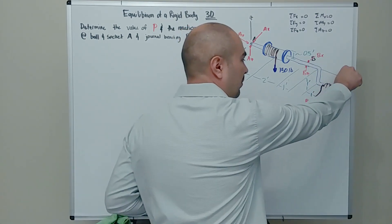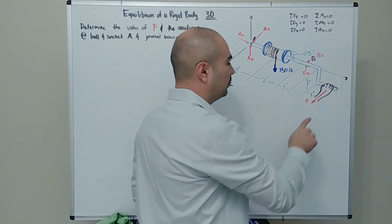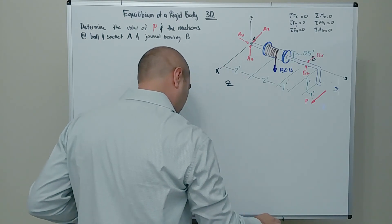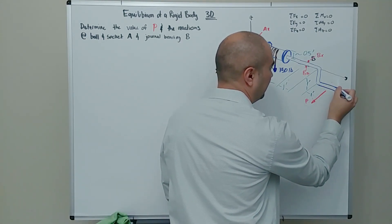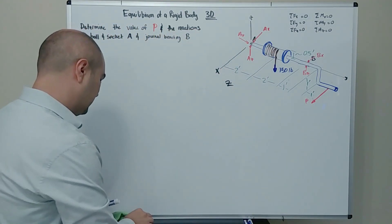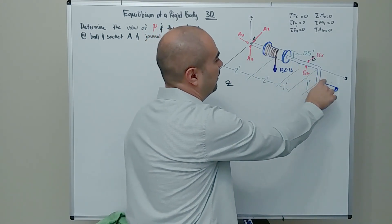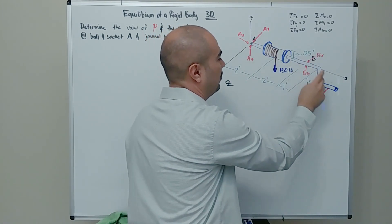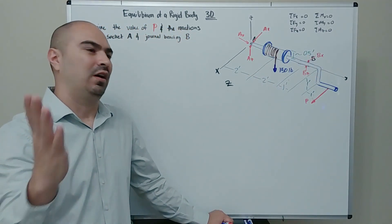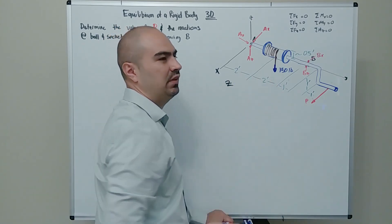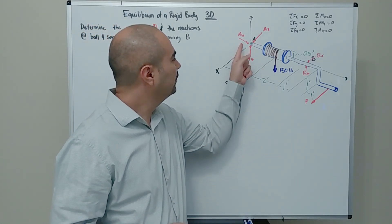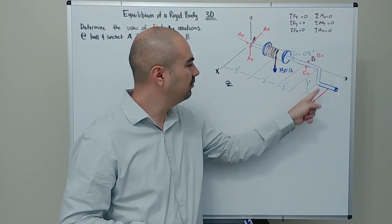The only other place the crank interacts with the outside world is where the hand pulls on it with force P — we need to figure out what P is. Remove the hand, complete the free body diagram: the outline, the 150 lb applied force, and the reaction forces. Now we have the FBD with distances and the X-Y-Z coordinate system. We have 6 unknowns, so we'll need all six equations of equilibrium.